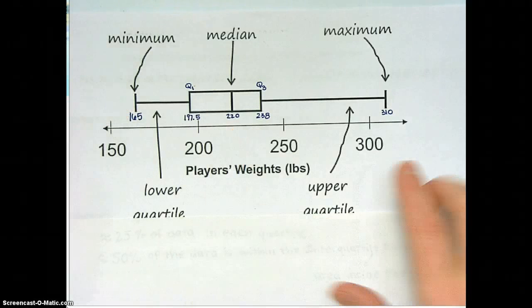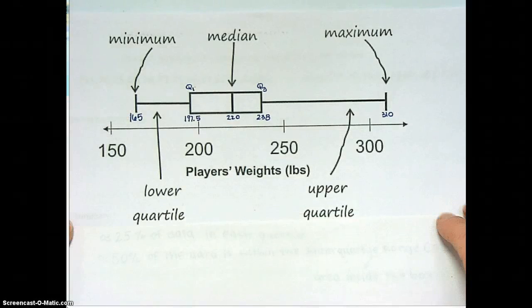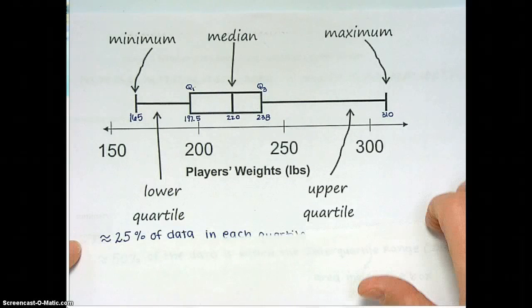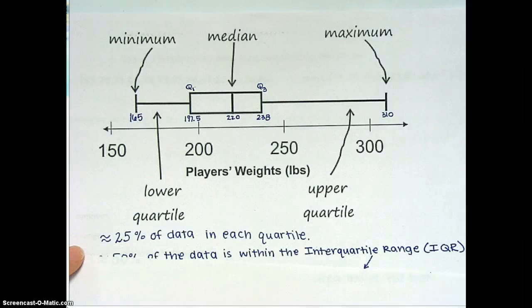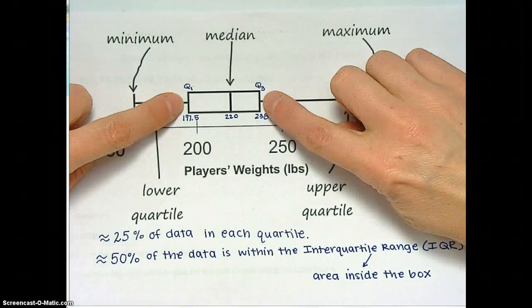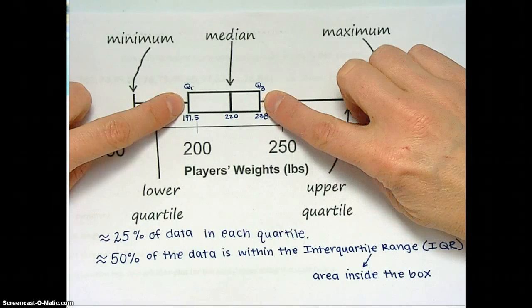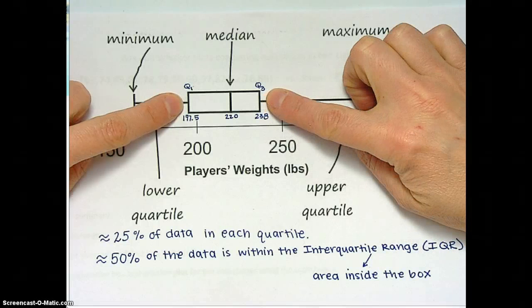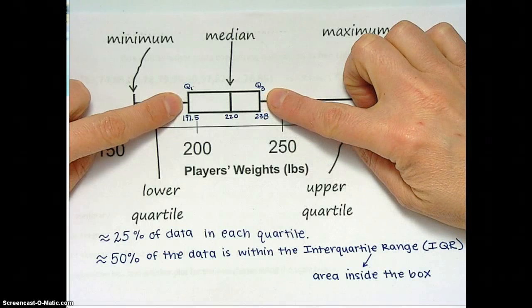So it displays the lightest weight person on the team, the heaviest person on the team over here, the median, so the man in the middle, right there, and this is the player's weights. Each piece is a quartile, 25% of the data is shown in each quartile, 50% of the data is within the interquartile range, or inside the box.